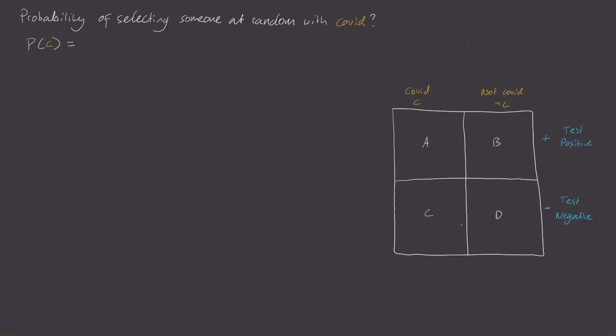Well, in this case, the total number of people with COVID are A plus C, and the total number of people in the city is the sum of everything here, A plus B plus C plus D. So that means that the probability of selecting someone at random with COVID is A plus C divided by A plus B plus C plus D.